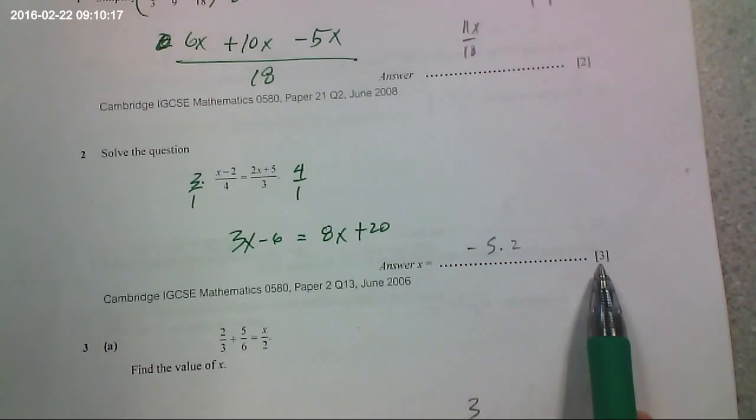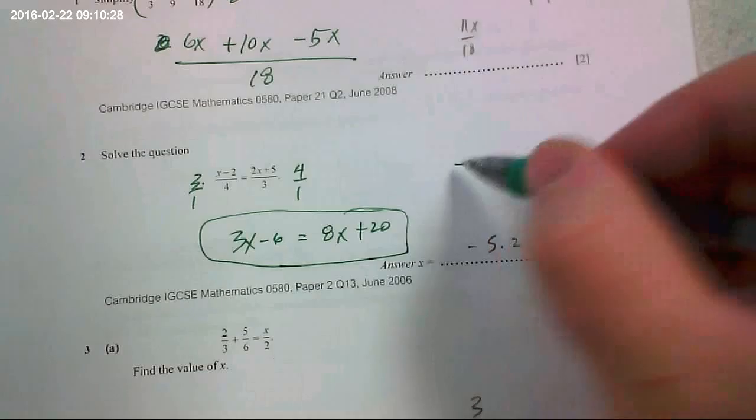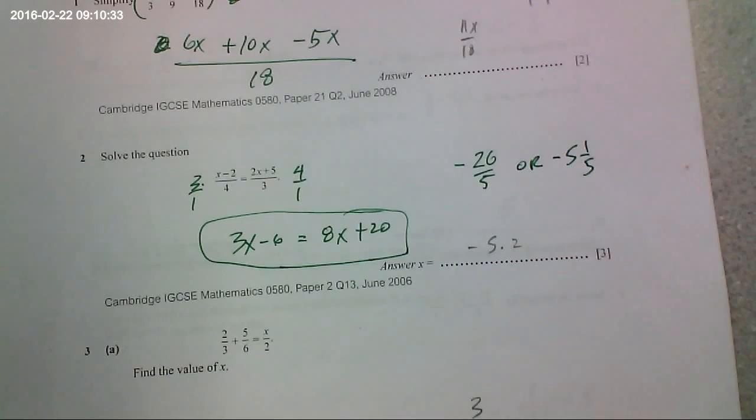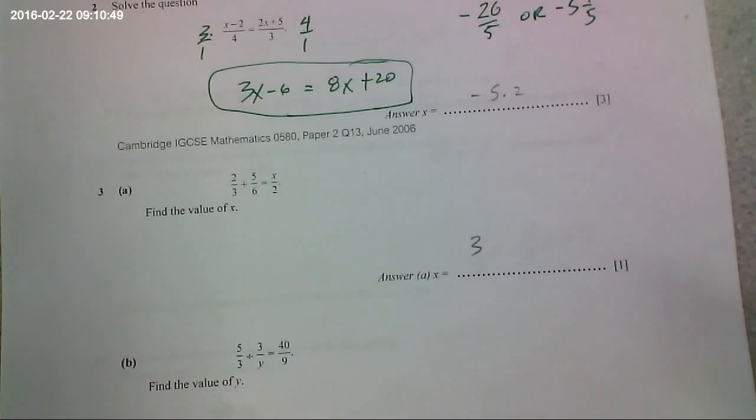And so, 3x minus 6 equals 8x plus 20. And then you solve that. Is that good or no? Yeah. Is that good? Okay. So, just to make sure we're all on the same page. If you got it wrong, you already wrote down the correct answer and you marked yourself wrong.